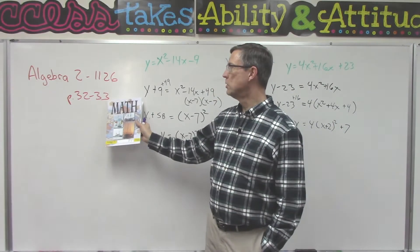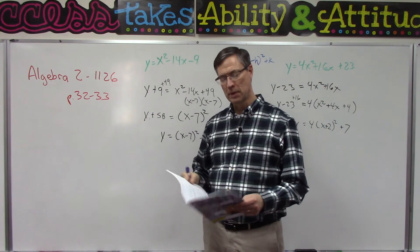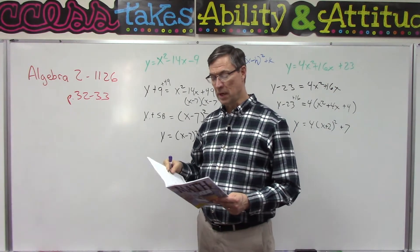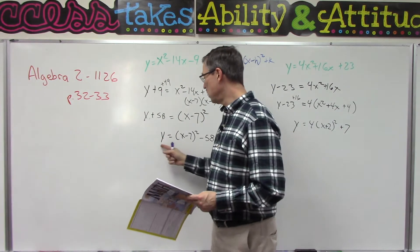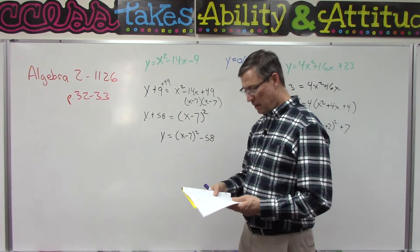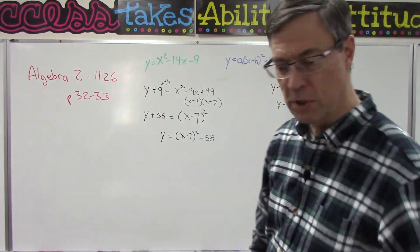Okay, the last lesson is pages 32 to 33 of PACE 1126. This is finding the axis of symmetry and the vertex when we have an equation in this form. And there's three things we can tell just by inspecting or looking at this equation.